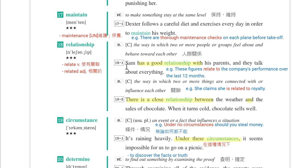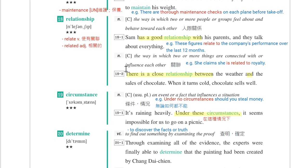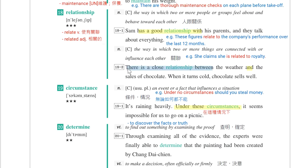第二个例句：There is a close relationship between the weather and the sales of chocolate. When it turns cold, chocolate sells well。天气跟巧克力销售有密切的关系，天气变冷所以人会想补充热量，巧克力就卖得很好。There is a close relationship between A and B。动词是relate，形容词是related。